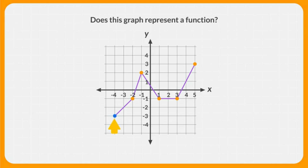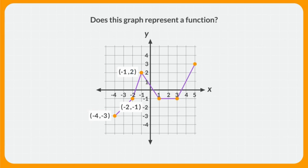So we're going to look at the points on this graph to see if each x value has exactly one y value. Starting here, this point has an x value, or input, of negative 4, and a y value, or output, of negative 3. The next point is negative 2, negative 1, and the next point is negative 1, 2. These three points all have different x and y values, so none of the inputs or outputs repeat.